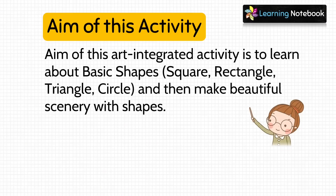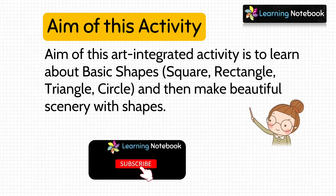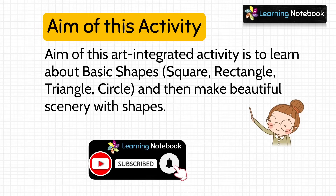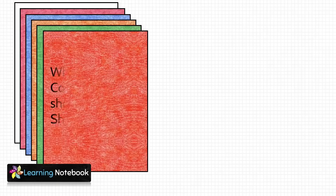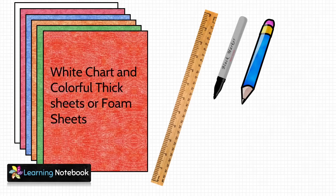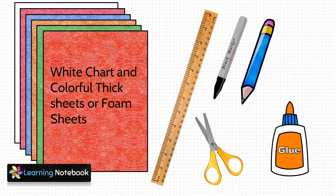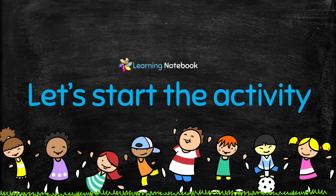The aim of this art integrated activity is to learn about basic shapes — that is square, rectangle, triangle, and circle — and then make beautiful scenery with shapes. If you are enjoying watching videos on our channel, do like, share, and comment. Also, do not forget to subscribe to our channel Learning Notebook. For this activity we need a white chart, few colorful thick sheets, a ruler, a black marker pen, a pencil, a pair of scissors, and a glue bottle. Now let's start with the activity.